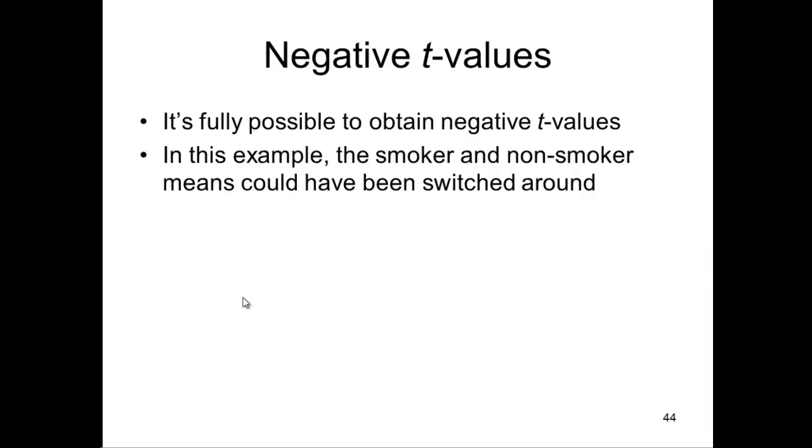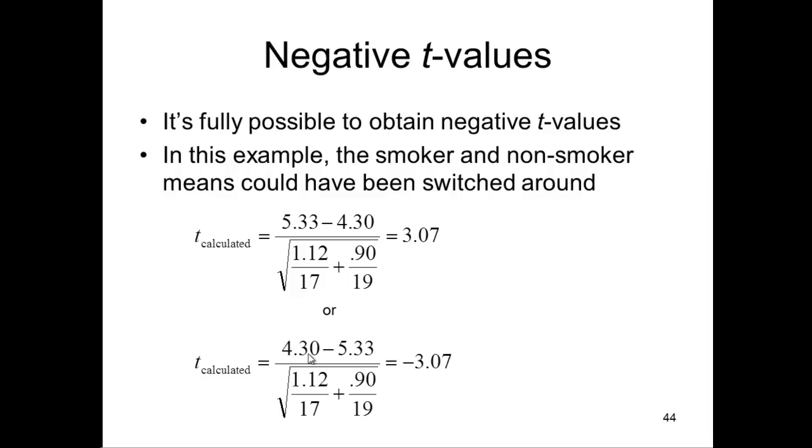And it's really just arbitrary which mean you put first. So in this case here I put non-smoker means first, 5.33 minus 4.30 for a t-value of 3.07. Now I could have reversed it. I could have said 4.30 minus 5.33, which gives me negative 3.07.